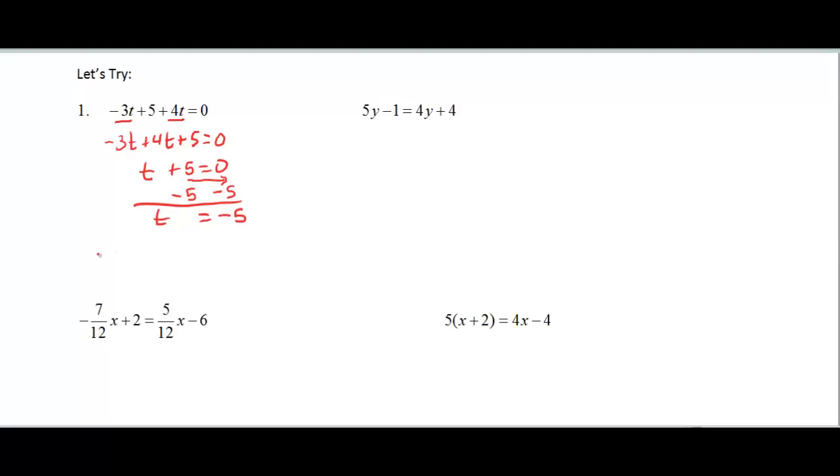And if we check it, negative 3 times negative 5 plus 5 plus 4 times negative 5 should be equal to 0. Negative 3 times negative 5 is positive 15 plus 5, and then we have to multiply.